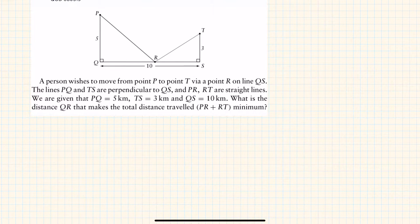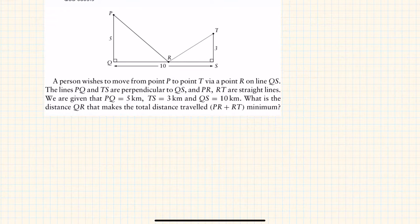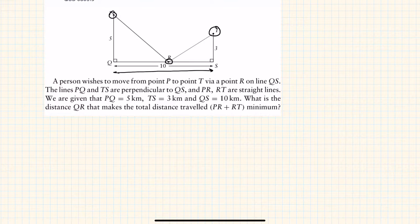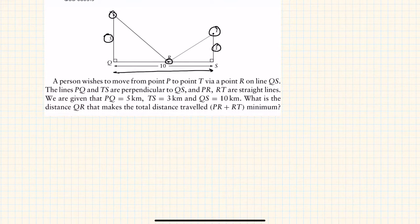Welcome to this question of the day problem. A person wishes to move from point P to point T via a point R on line QS. The lines PQ and TS are perpendicular, and PR, RT are straight lines. We are given that PQ is 5, TS is 3, and QS is 10. You have to find the distance QR such that the total distance traveled — PR plus RT — is minimum.